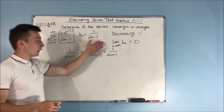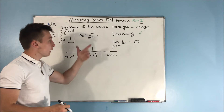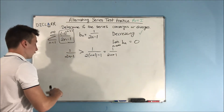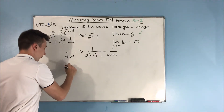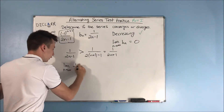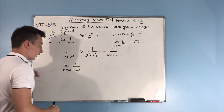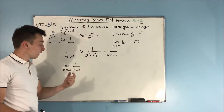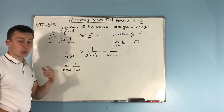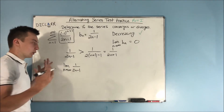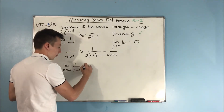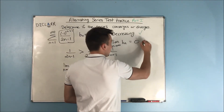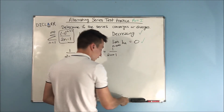For our second condition, we want the limit as n approaches infinity of B sub n — which is one over two n minus one — to equal zero. The minus one won't matter because n becomes an infinitely large quantity, giving us an infinitely large denominator, so this goes to zero. It passes the second condition as well, so it is convergent by the alternating series test.